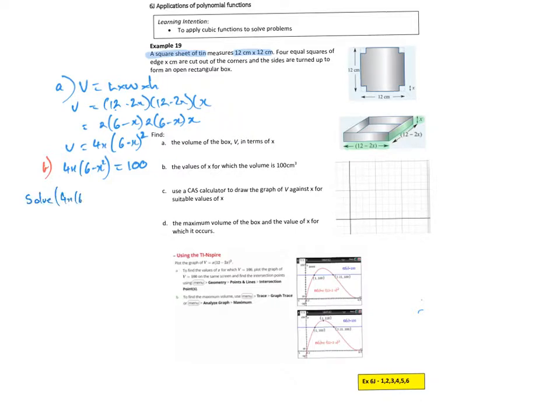4X times 6 minus X squared, X all squared equal to 100 for X. And that gives me X is equal to 1. Or X is equal to 3.21.